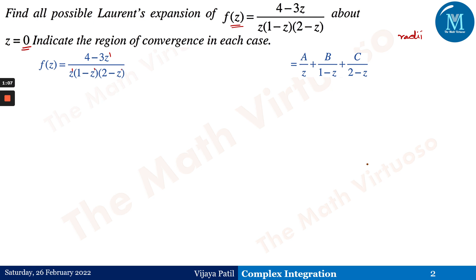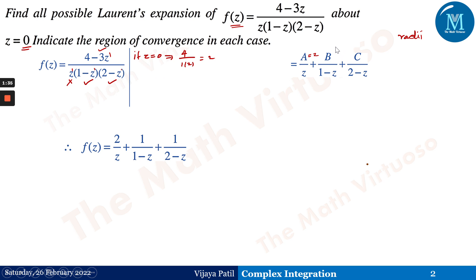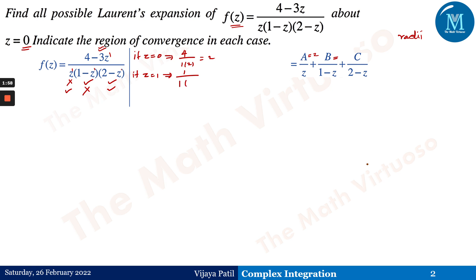We have z to the power one in each factor, so we assign constants A, B, and C for z, (1 - z), and (2 - z) respectively. Using the hiding method: for A, put z = 0 in the numerator — that gives 4 divided by 1 times 2, so A = 2. For B, put z = 1 — that gives (4 - 3) divided by 1 times (2 - 1), so B = 1.